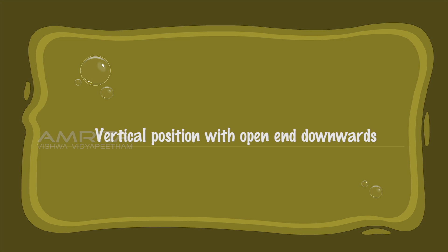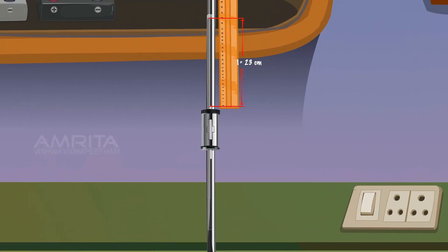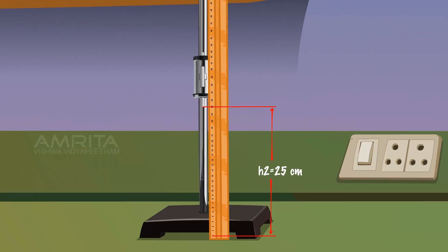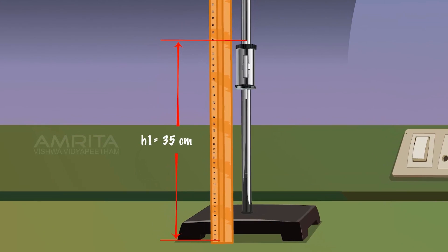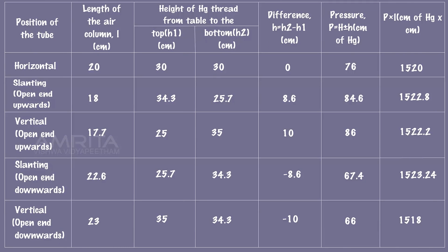Vertical Position with Open End Downwards: Place the quill tube vertically with its open end pointing downwards. Measure L, H1, and H2. The length of the air column L = 23cm, H2 = 25cm, H1 = 35cm. Then H = H2 - H1 = 25 - 35 = -10cm. The pressure of enclosed air: P = 76 - 10 = 66cm of mercury. Record the measured and calculated values in the tabular column and find P × L.